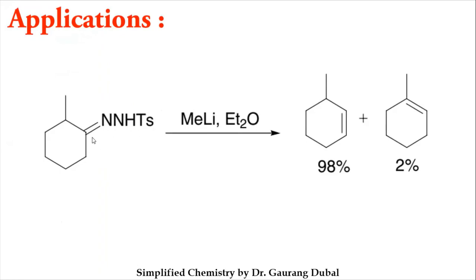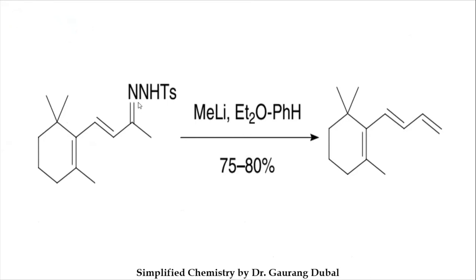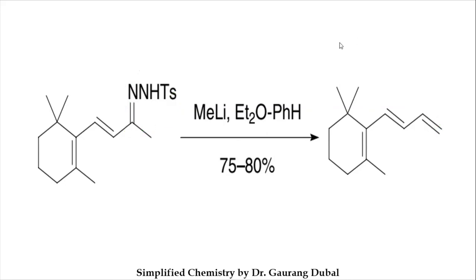For the application: suppose you have a tosylated hydrazine in a given form. You can react with methyl lithium — butyl lithium is not necessary, other alkyl lithiums also work. One example shows methyl lithium giving 98% of one product and 2% of another. In another example, a tosylated hydrazine compound reacts with methyl lithium and undergoes the Shapiro reaction, forming an olefin bond — which is the focus area of the reaction. So the Shapiro reaction converts tosylhydrazones derived from ketones into alkynes or olefins.